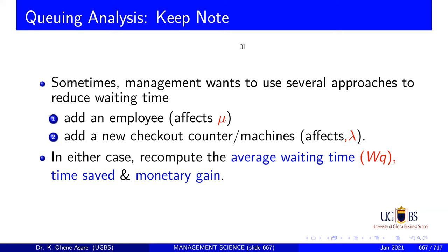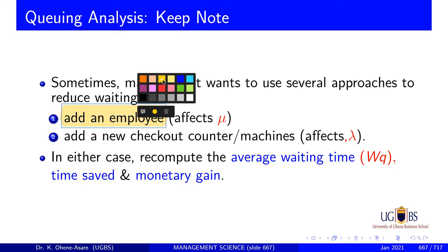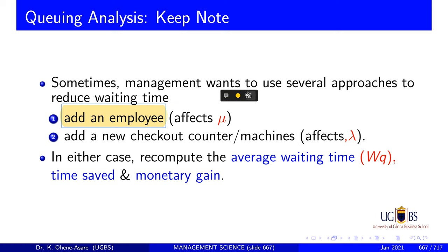So you don't have one server — you bring another server to come and help. Now, this is going to affect the service rate. One employee has been added, so the service rate will be affected. Now, the second option is not to do that. Sometimes the other means of doing this is to go beyond that service rate.